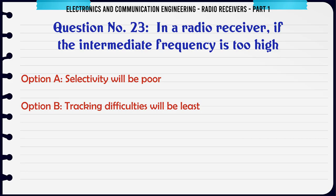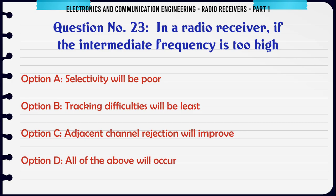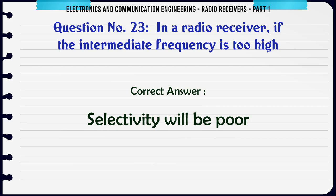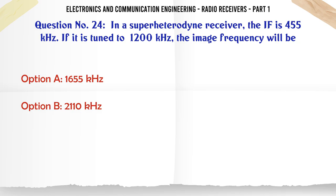In a radio receiver, if the intermediate frequency is too high: A. Selectivity will be poor. B. Tracking difficulties will be least. C. Adjacent channel rejection will improve. D. All of the above will occur. The correct answer is selectivity will be poor.